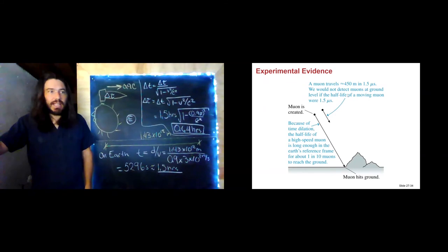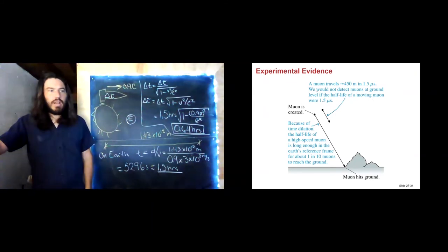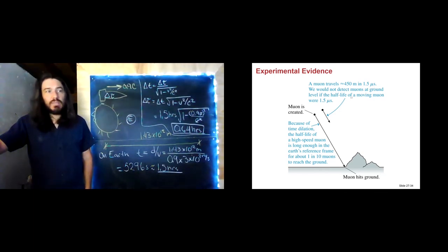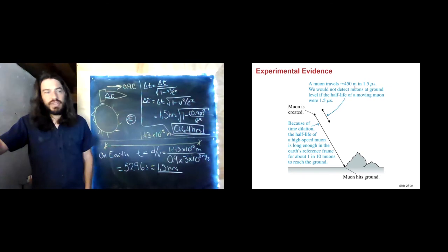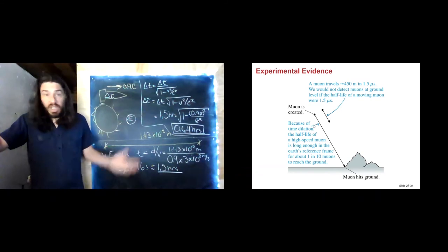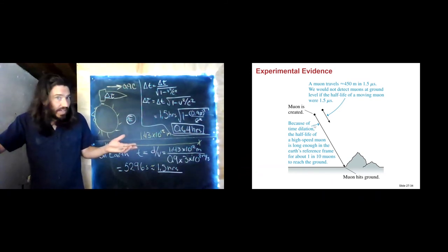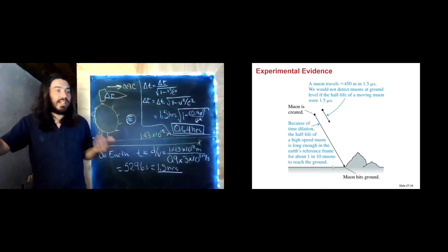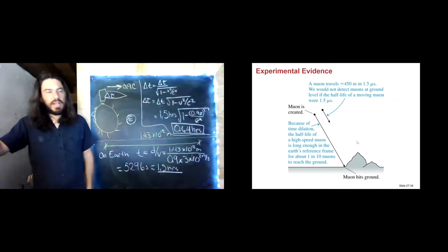Here's a schematic: in a half-life of 1.5 microseconds, in the laboratory we'd expect the muon to move only 4.5 meters. But because the muon is moving very quickly, according to someone on the ground the clock moves slower — it's 200 microseconds from their frame, even though from the muon's frame it's still 1.5 microseconds.